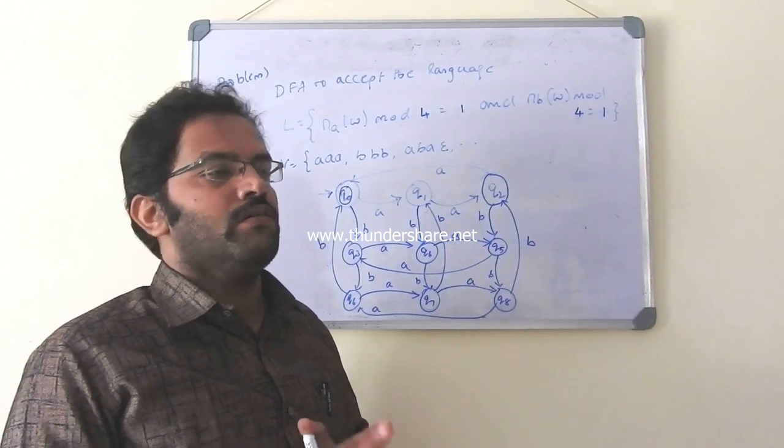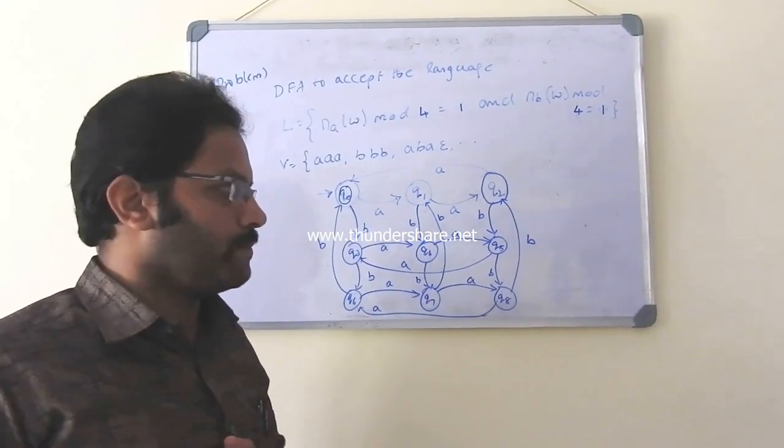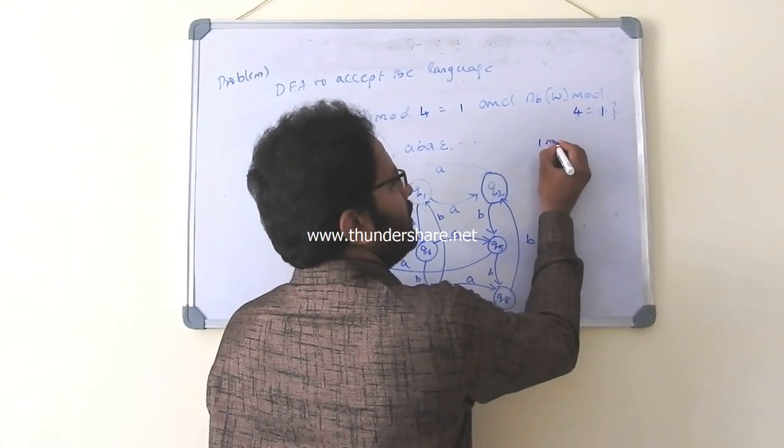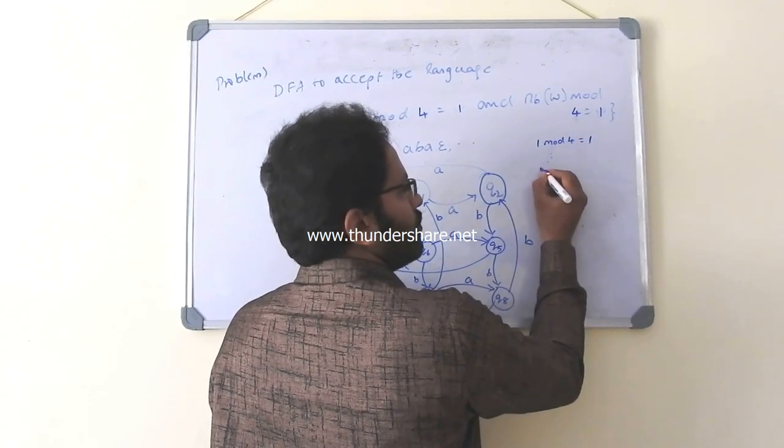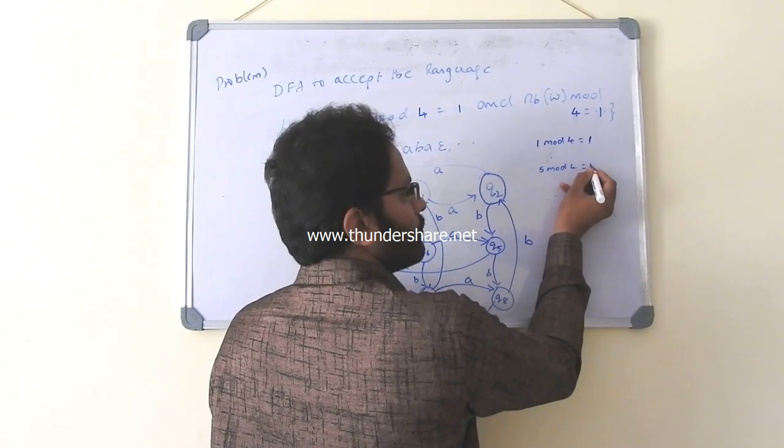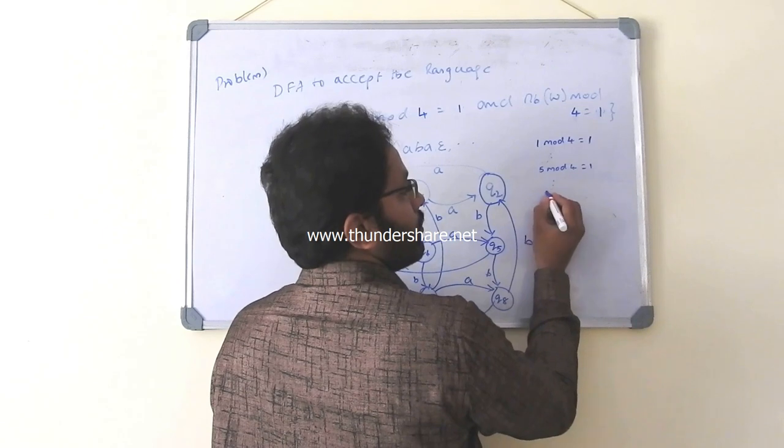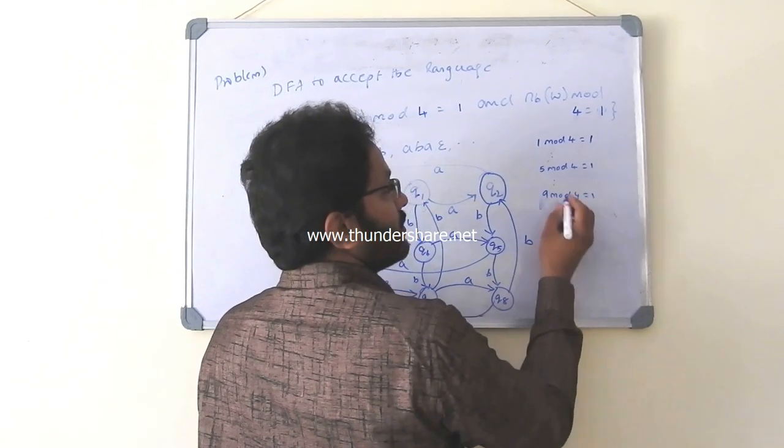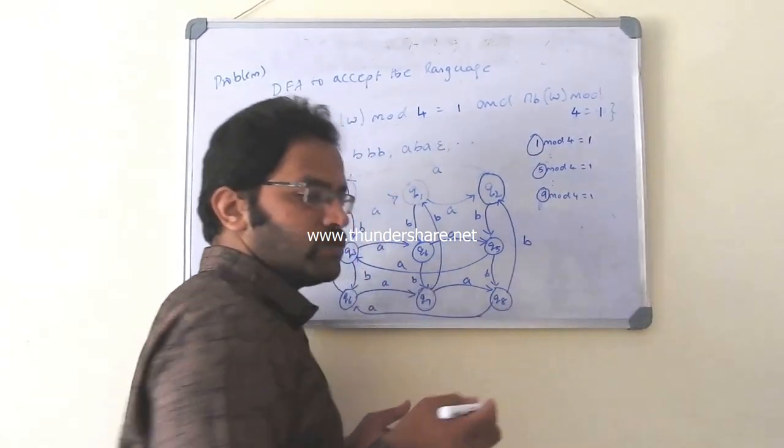5, then 9, 13, it goes on. That means, I should check out when you get the result as 1 when you divide it by 4. So this clearly says I should have number of A's and number of B's either 1 or 5 or 9 and so on.